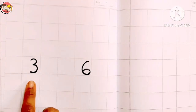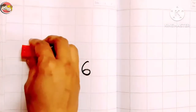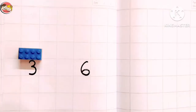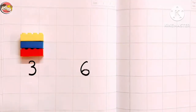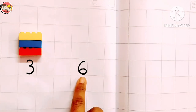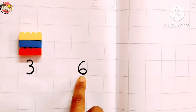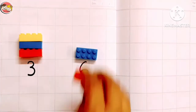One more example. Tell me, which number is this? Yes, this is number three. Now I am going to place three blocks here: one, two, and three. Now look at the next number — which number is this? Yes, number six. So I am going to place six blocks: one, two, three.